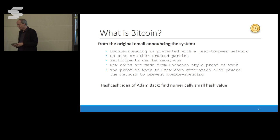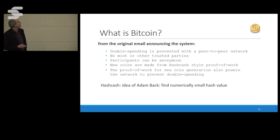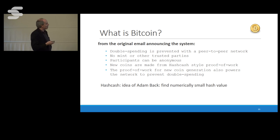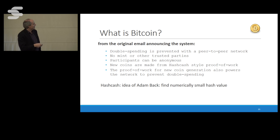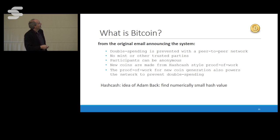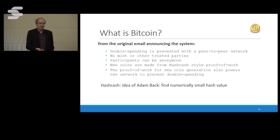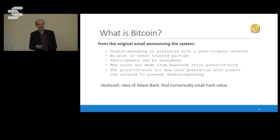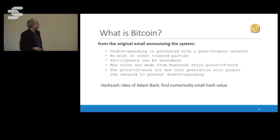So what is Bitcoin? Bitcoin came about in 2008 and is very different from anything else. This is a quote from the original email. Double spending is prevented using a peer-to-peer network — there is no mint, which is very different from any other system. All previous systems — David Chaum's systems, e-gold — always had a central mint that decided how to make money. In Bitcoin, anybody can make money; it's distributed. Participants can be anonymous, and new coins are made with hashcash-style proof of work.